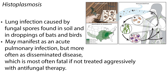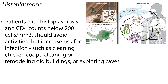Histoplasmosis is a lung infection caused by fungal spores found in soil and in droppings of bats and birds. It may manifest as an acute pulmonary infection, but more often as disseminated disease, which is most often fatal if not treated aggressively with antifungal therapy. Patients with histoplasmosis and CD4 counts below 200 cells per cubic millimeter should avoid activities that increase risk for infection, such as cleaning chicken coops, clearing or remodeling old buildings, or exploring caves.